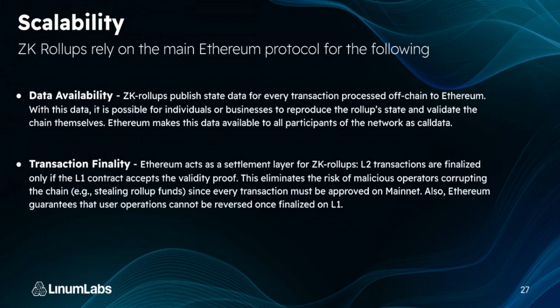ZK rollups rely on the main Ethereum protocol for data availability: ZK rollups publish state data for every transaction processed off-chain to Ethereum. With this data, individuals or businesses can reproduce the rollup state and validate the chain themselves. Ethereum makes this data available to all participants as call data. For transaction finality, Ethereum acts as the settlement layer. Layer two transactions are finalized only if the layer one contract accepts the validity proof — eliminating the risk of malicious operators corrupting the chain and stealing rollup funds, since every transaction must be approved on mainnet.